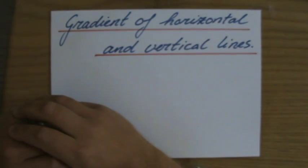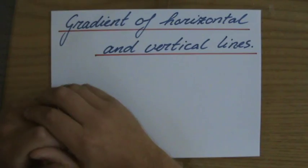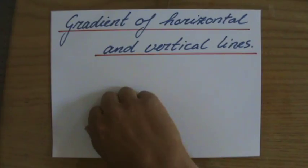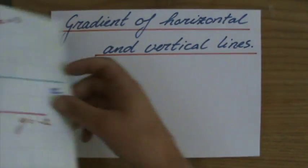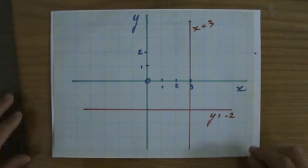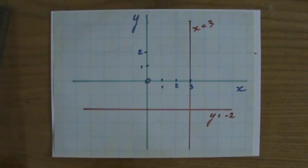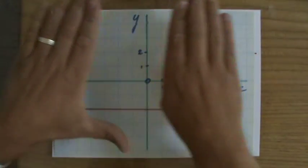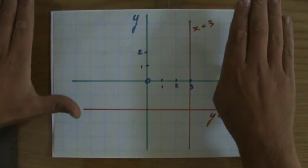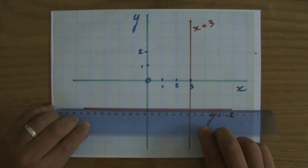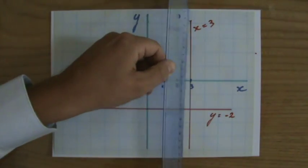I'd like to talk very briefly about two special lines and their gradients — the gradient of horizontal and vertical lines. I drew here a horizontal and a vertical line. My experience is that students get confused about what is horizontal and what is vertical. Now you know what the horizon is. If you look at the distance, the horizon — well, that is horizontal. The horizon is horizontal. So this is a horizontal line, and this is a vertical line.